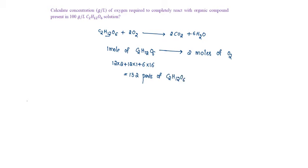This requires 2 into 2 into 16 that is equal to 64 parts of oxygen. Then 1 part of C2H12O6 will require 64 by 132 parts of oxygen.